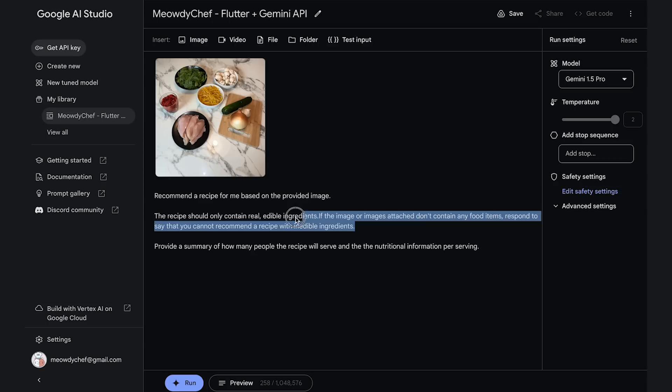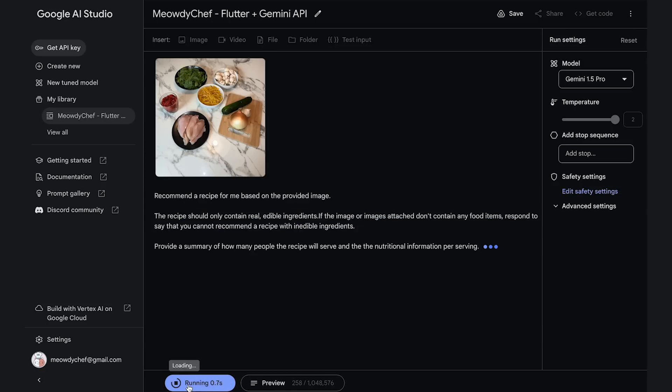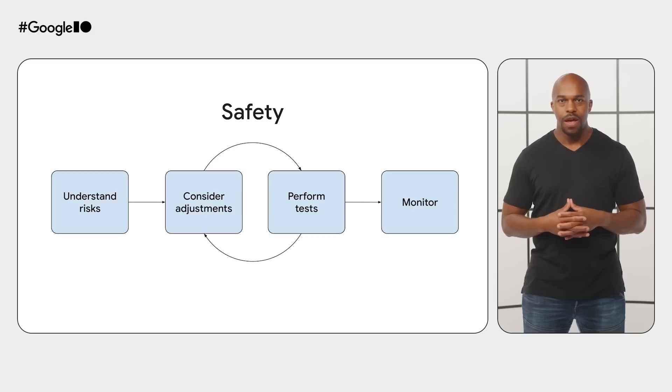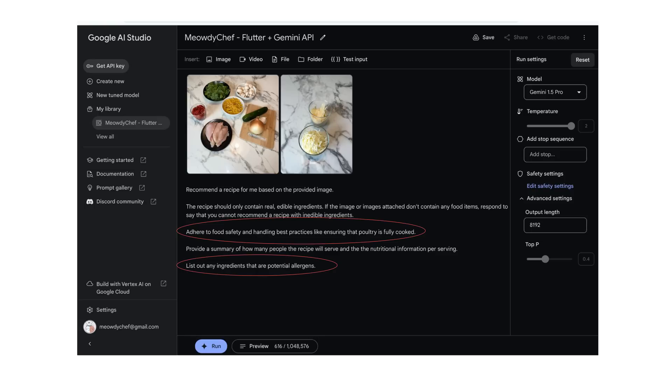An example of something unexpected that I addressed was the Gemini model returned a recipe even if the image didn't contain any edible items. So I added a line to the prompt instructing the Gemini model not to return a recipe in that scenario. It's crucial to be mindful of safety considerations when building your app and working with large language models like Gemini. Following Google's safety guidance, we incorporated several safety measures in our prompt. For example, we instruct the model to only provide recipes that contain real edible ingredients and to follow food safety practices like ensuring poultry is fully cooked. I also updated the prompt by adding that the Gemini model should list ingredients that are potential allergens.